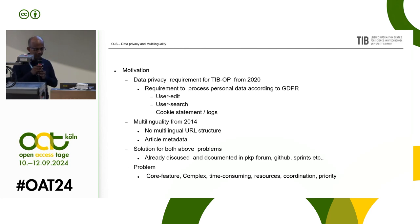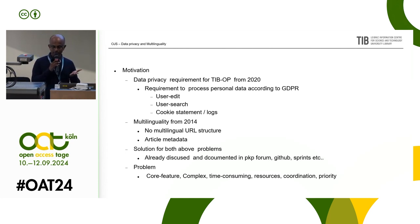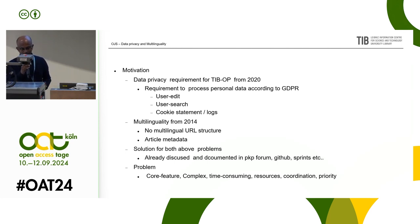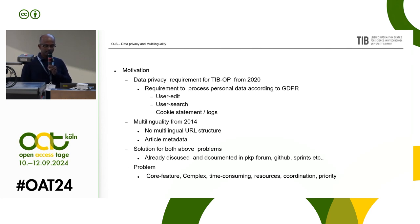Regarding multilinguality: I have been working with OMP since 2014, and even before that the problem existed. OJS and OMP do not have multilingual URL structures, and that is still not there. You have the possibility to have different languages — OJS currently has more than 50 languages — but you can change the language without being able to permanently bookmark these things. And the problem doesn't end there: if you want to index them, you do not have permanent URLs.